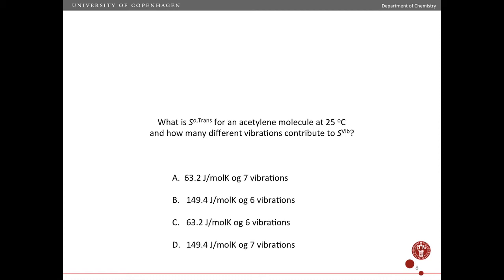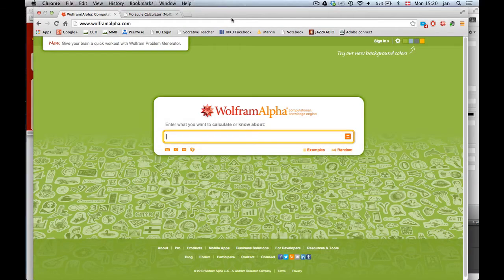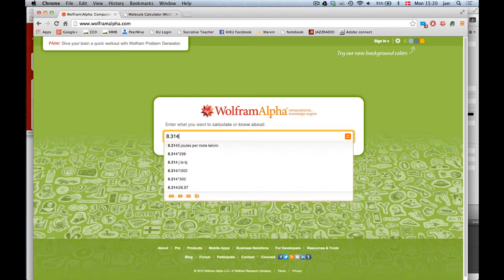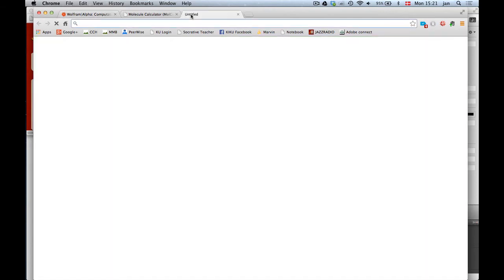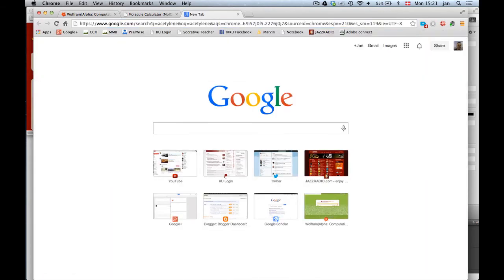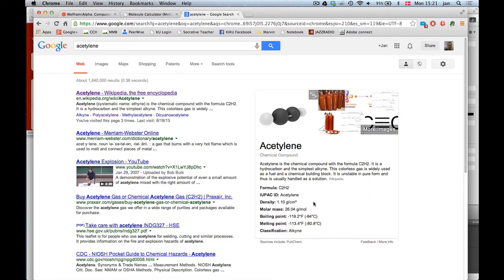Ready? Let's start with the translational entropy. We have the gas constant, and then the log. Then we have our constant, which is 0.3117. Then we have the mass of acetylene, so we have to compute that. But I'm willing to bet that if we just Google acetylene, we'll find it. Yes, so 26.04, and in grams per mole that's exactly the unit we want.